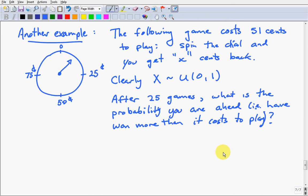Let's suppose that this game involves spinning a spinner, and it points to an amount between 0 cents and 99.99999 cents, and you get x cents back wherever the spinner points. So clearly the random variable x, which is where the spinner points, is uniform on 0,1. Now if this game costs you 51 cents to play, the question is this.